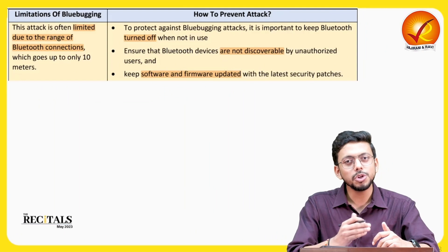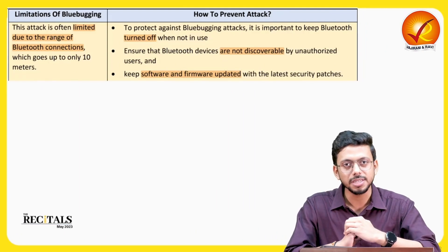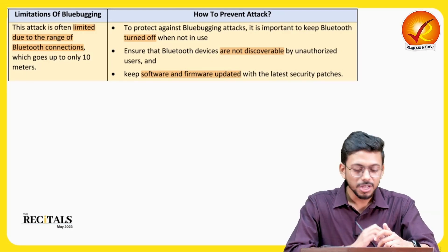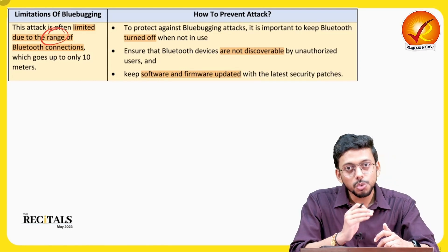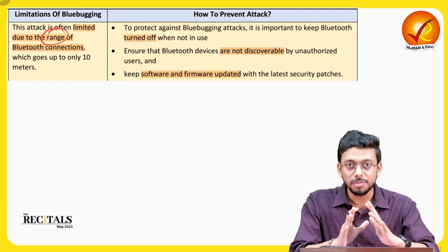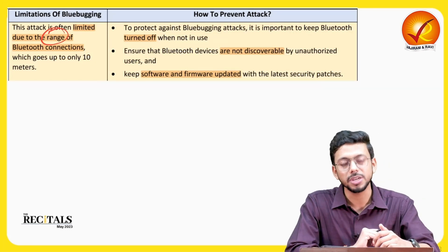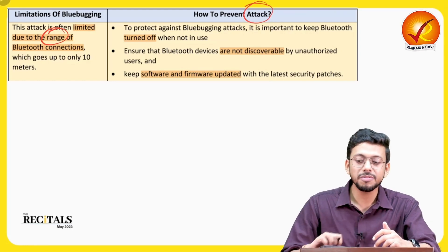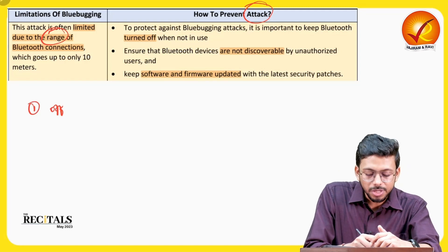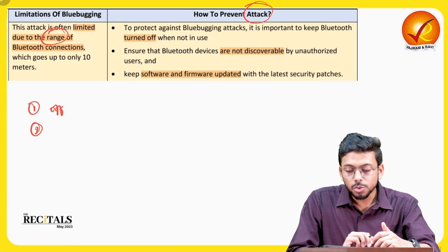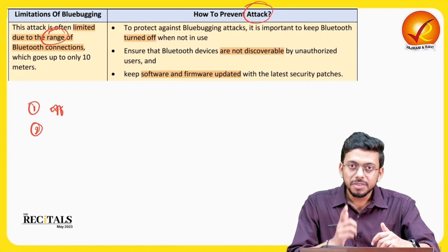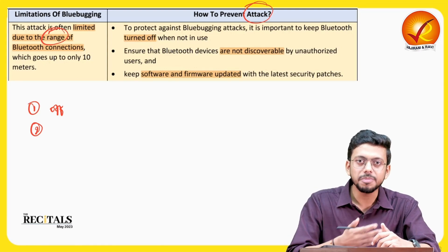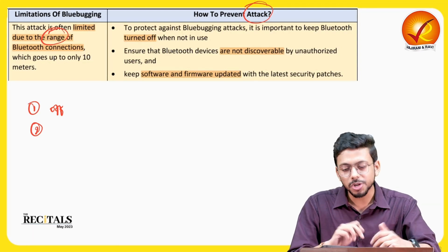Bluetooth has a limited range of function. It mostly works in the range of one to one hundred meters, so blue bugging can only be done by being physically near that person — you cannot do it from another country. To prevent this attack: first, keep your Bluetooth off when not required. Second, make your Bluetooth undiscoverable, and only make it discoverable when you want to connect to someone you know. Software updates and antiviruses on your phone also help protect it.